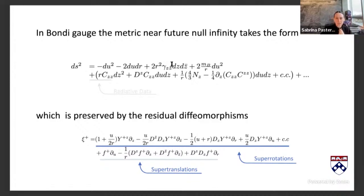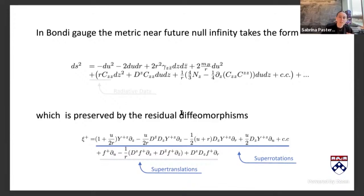They found the radial falloffs consistent with solutions that have radiation. In that class of spacetimes you can ask: what diffeomorphisms preserve that class of falloff? They found a much larger symmetry group than just Poincaré, because the function f is now a super-translation — you can translate each direction in the night sky independently as a function on the sphere.